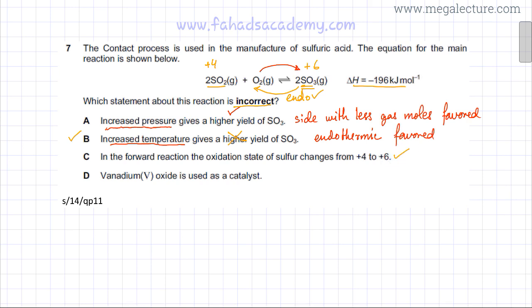So this statement is also correct. And vanadium pentoxide or vanadium 5 oxide is used as a catalyst so this statement is also correct. So the only incorrect statement was option B and we were looking for an incorrect statement, so option B is your answer.